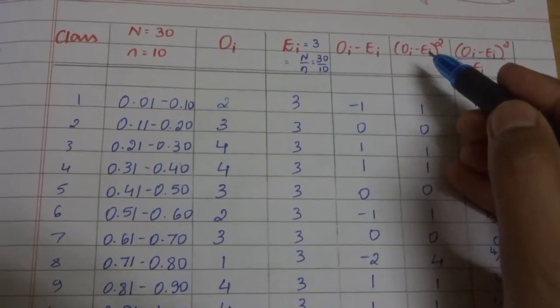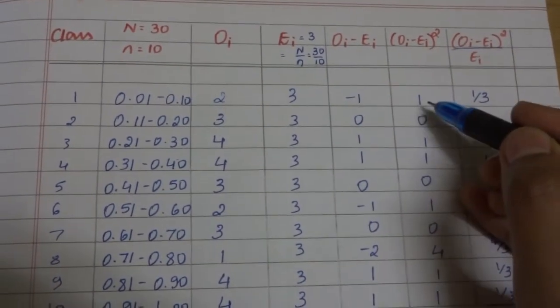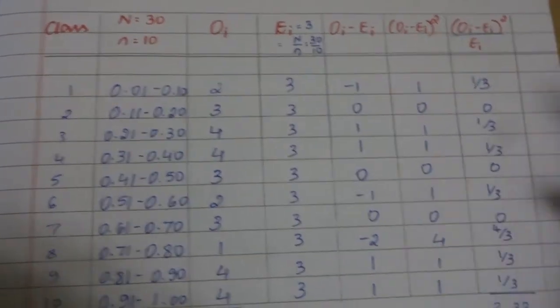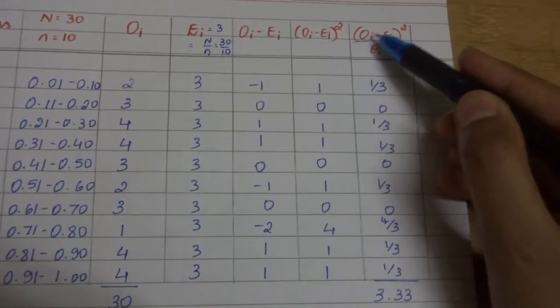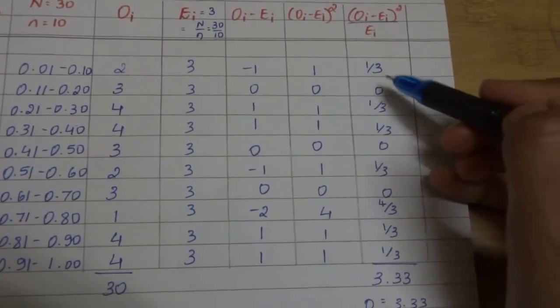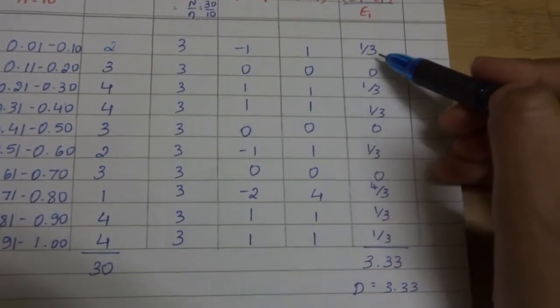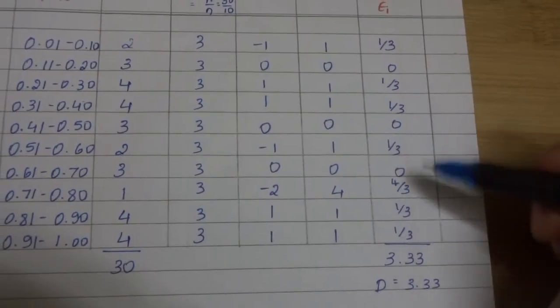In the next column, you find the square of oi minus ei. So it becomes 1, 0, 1, and so on. In the last column, you have to divide oi minus ei the whole square by ei value, that is 3. So it becomes 1 by 3, 0, 1 by 3, 1 by 3, 0, and so on.